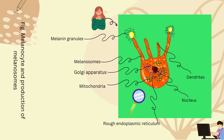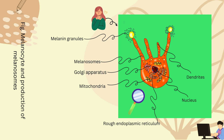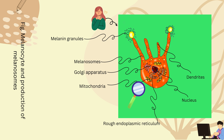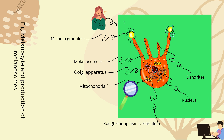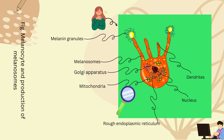Melanocytes are solely responsible for producing melanin, the pigment that imparts the skin with its various shades of color. Melanocytes are dendritic cells located in the basal layer of the epidermis. They produce the pigment melanin from tyrosine through a complete biosynthetic pathway governed by the rate-limiting enzyme tyrosinase, located within organelles termed melanosomes. Upon maturation, melanin is transferred to keratinocytes for imparting pigmentation to the skin.